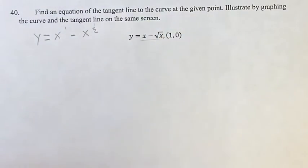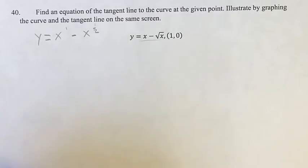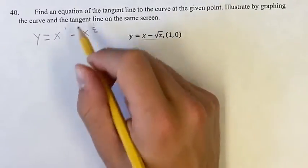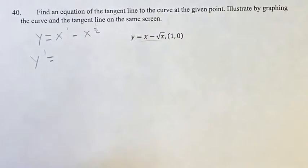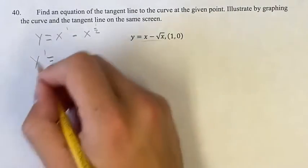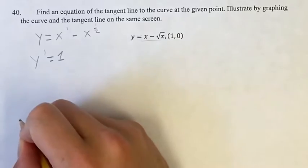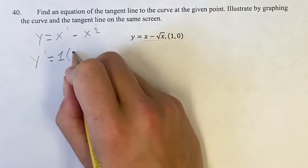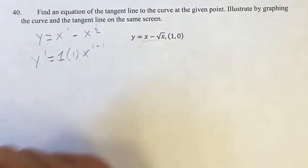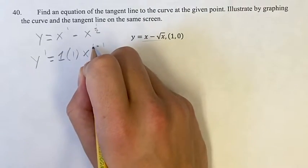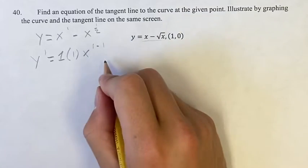And now using the rules that we know so far, we can use the power function rule to find the derivative of each of these. So our derivative is equal to, for this term, the coefficient is 1, so you put that out front. You bring the exponent down, so times 1, then x to the 1 minus 1, 1 your old exponent minus 1. Same thing here.